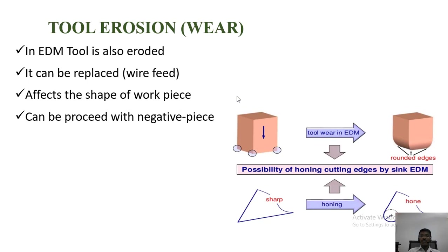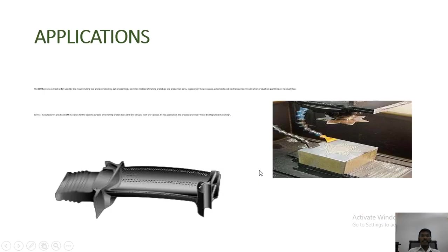It can be processed with negative piece and electroplating. These are the methods we can recondition this tool. Deposit the eroded graphite back. Suppose these four corners are eroded. If we are depositing this worn area with graphite, we can recondition this tool. Let us see the applications.